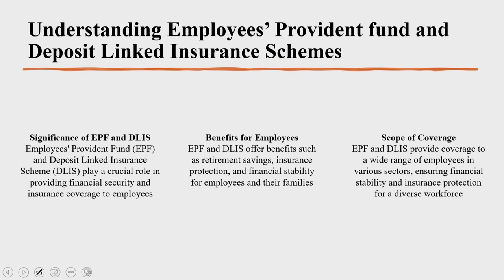What are the benefits? Both schemes offer benefits such as retirement savings, insurance protection, and financial stability for employees and their families. We have already seen what EPF is in greater detail; apart from that, insurance added on to that makes it the deposit linked insurance scheme. The scope of coverage is significant — it covers a wide range of employees in various sectors, ensuring financial stability and insurance protection.